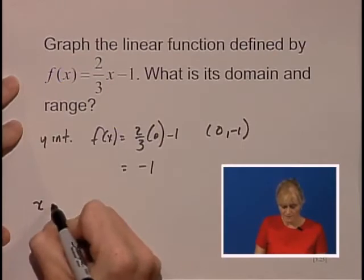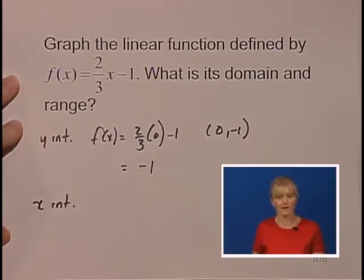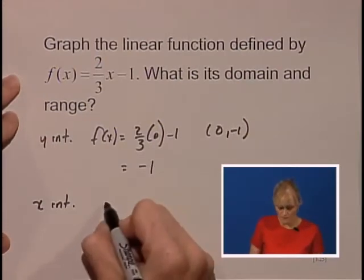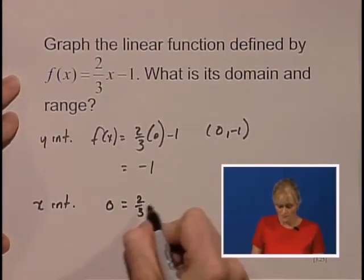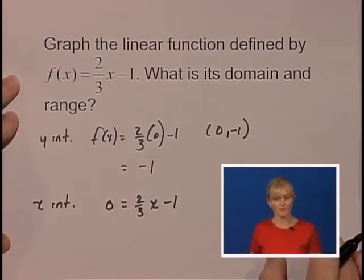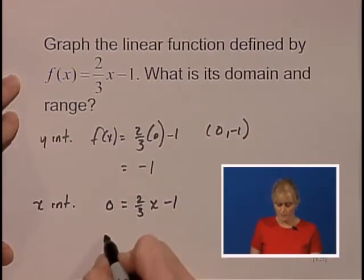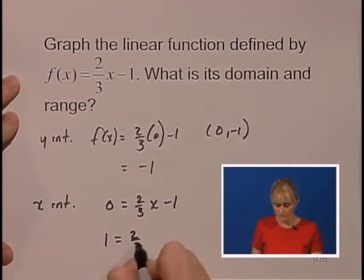Our x-intercept is found by replacing y, or f(x), with 0. So we'll have 0 = (2/3)x - 1. We're going to solve for x. We'll add 1 to both sides.